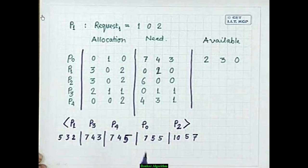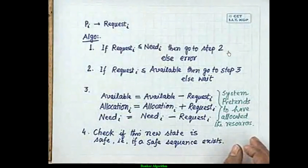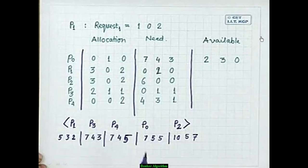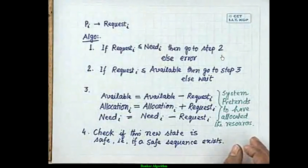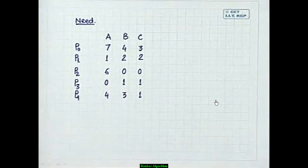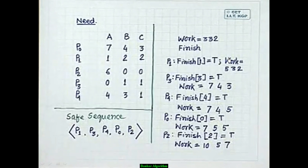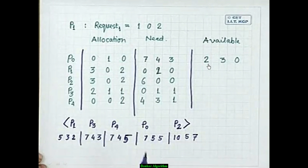Now suppose P1 makes a new request of [1,0,2]. First check: is Request ≤ Need? And is Request ≤ Available? Then update: new Available = Available − Request = [3,3,2] − [1,0,2] = [2,3,0].